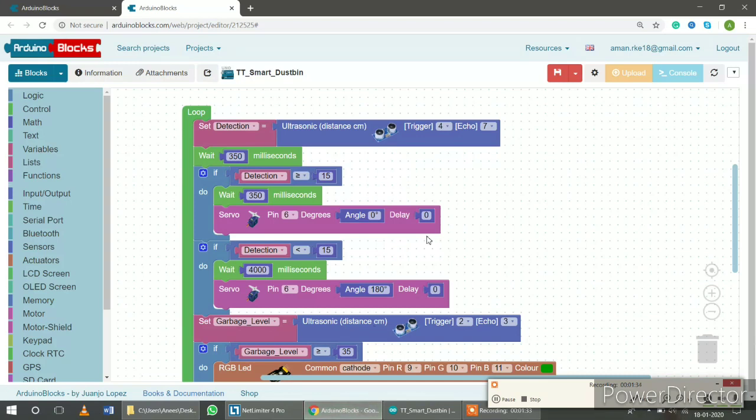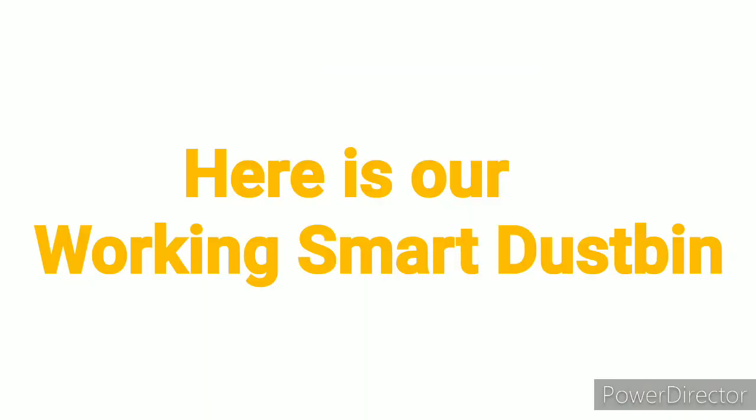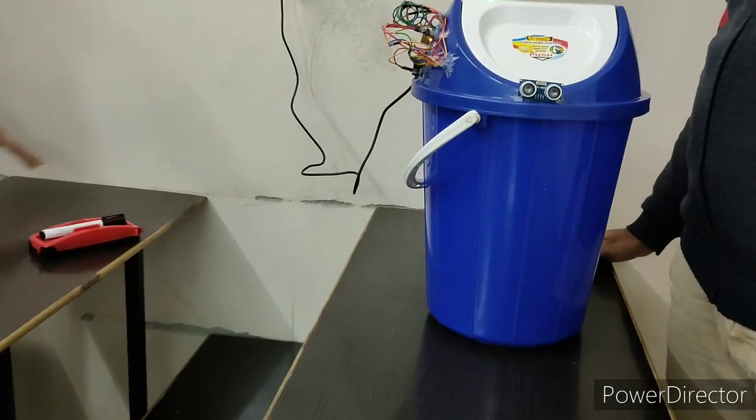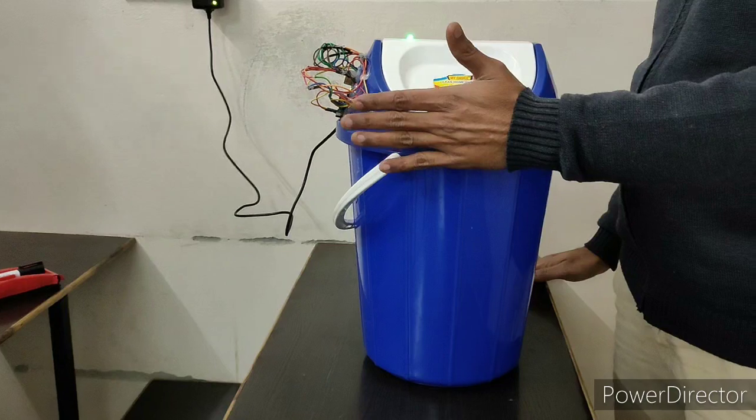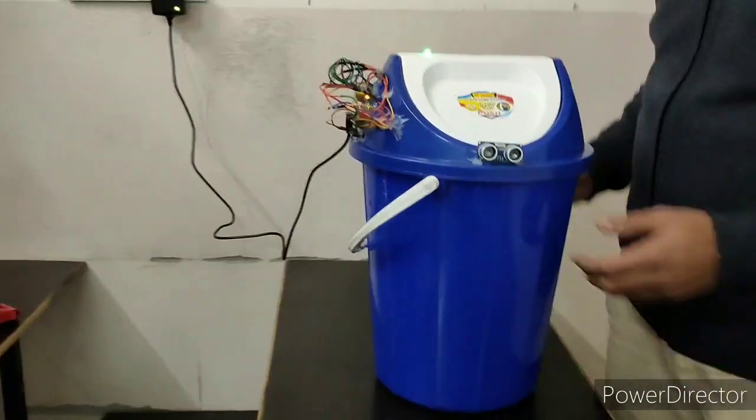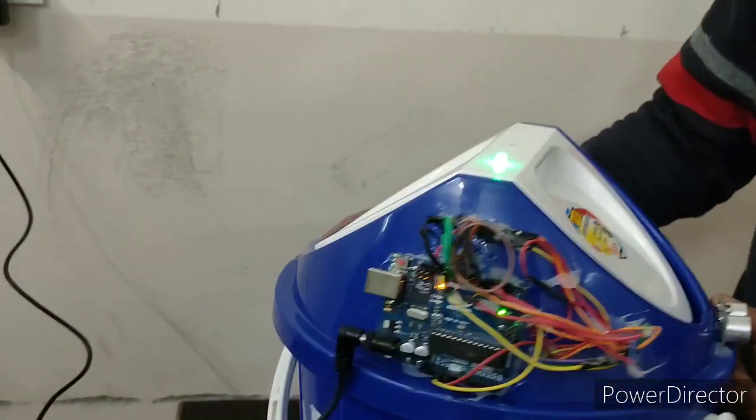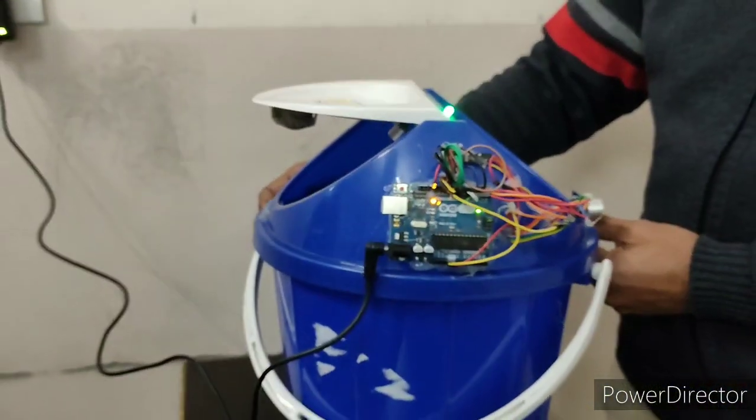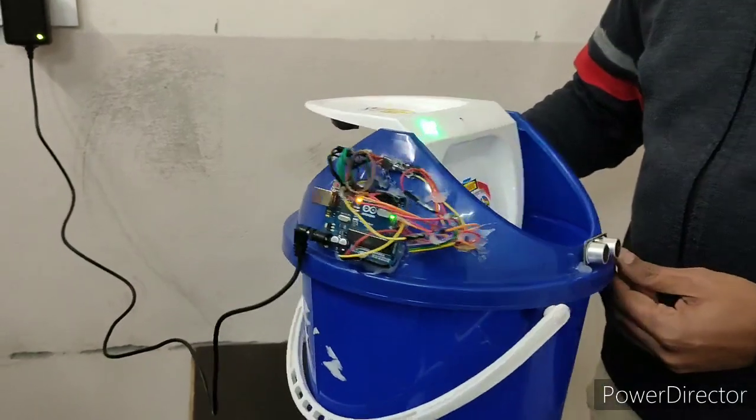Now let's move to the final phase. Let's see the working operation or working model of our smart dustbin. As you are seeing in the video, whenever an object will come within the range of ultrasonic sensor, it will open the flap. The flap will remain open for four seconds. But if an object is there continuously within its range, it will keep the flap open.